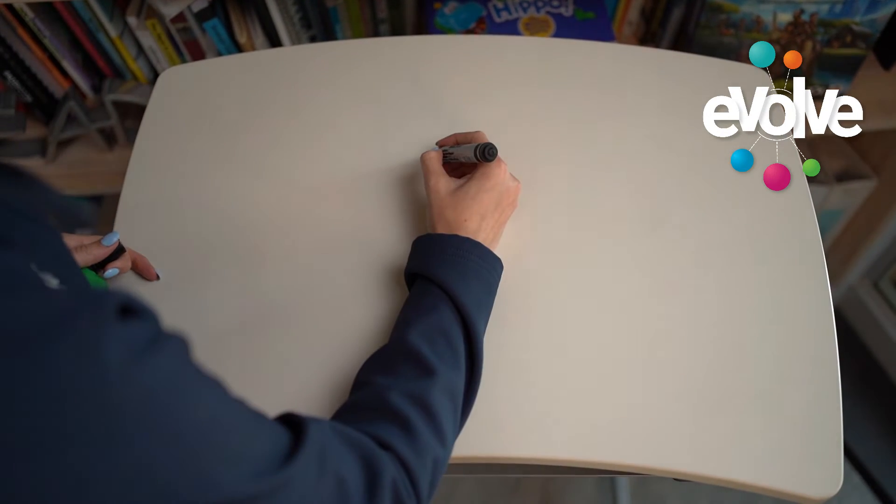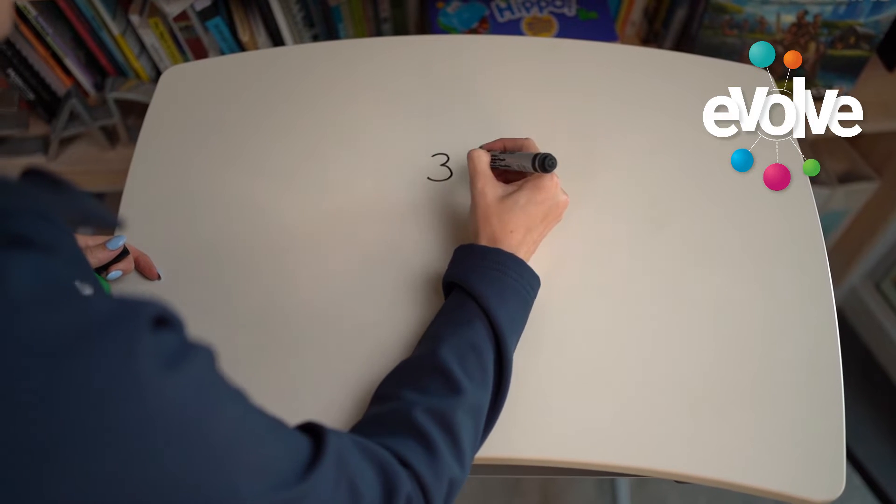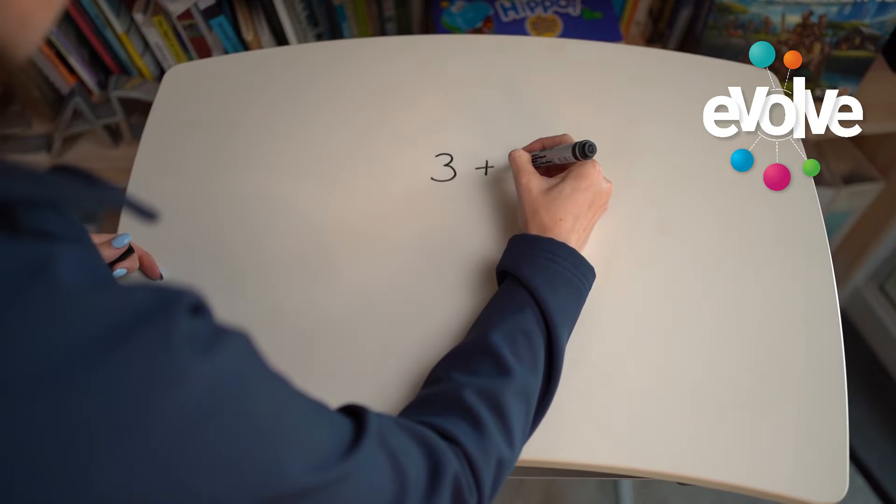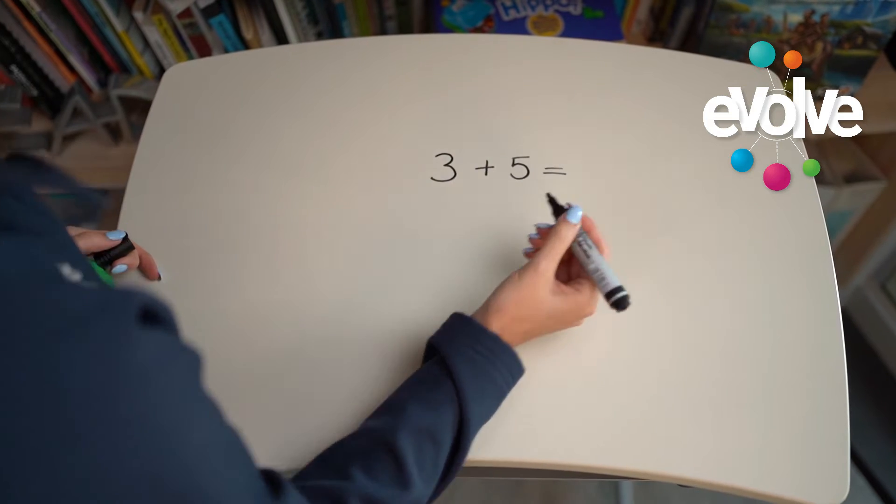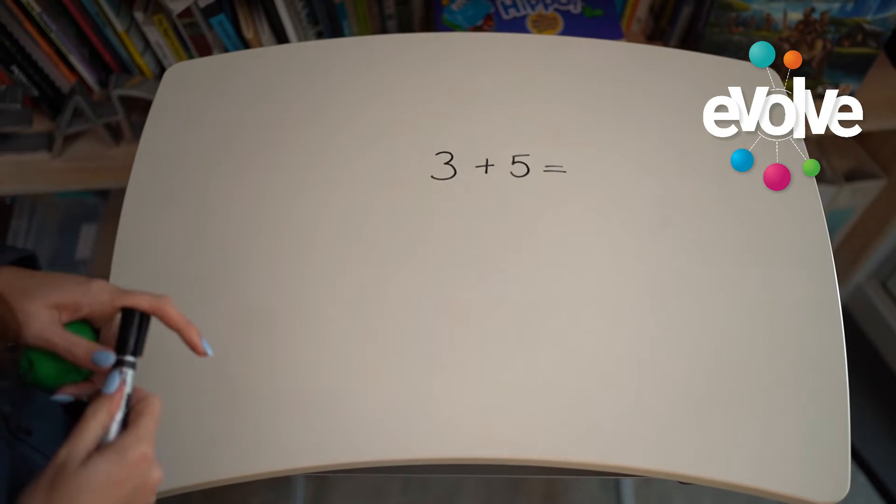The first thing we're going to do is we're going to write out our sum. We're starting with 3 plus 5. Don't forget your equal sign because remember, equals tells you that the answer is coming.